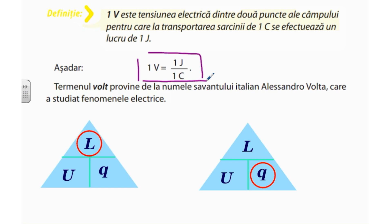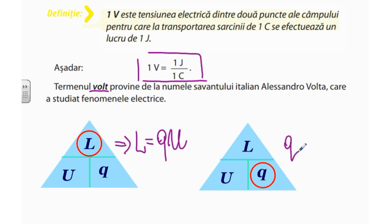Termenul volt provine de la numele savantului italian Volta, care a studiat electricitatea. Din formula tensiunii electrice putem exprima celelalte două mărimi. De exemplu, lucrul câmpului electric va fi egal cu produsul dintre cantitatea de sarcină și valoarea tensiunii. Sau, cantitatea de sarcină este egală cu raportul dintre lucrul câmpului electric și tensiune — expresiile numărul 2 și 3.